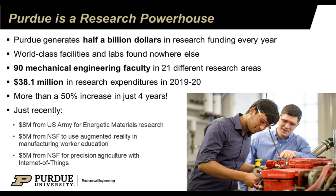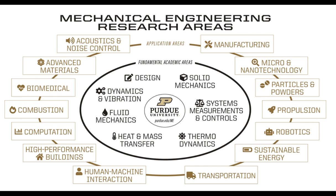Just recently, in August and September, we had great success with three nationally recognized centers coming to Purdue. One is $8 million per year for three years — already funded — so the total dollar amount is $24 million from the U.S. Army for energetic materials research coming to Purdue, 100% of it coming to Purdue. We are also part of two NSF Engineering Research Centers where, in each case, $5 million are coming to Purdue — one in Augmented Reality in Manufacturing Worker Education, and the other in precision agriculture using the internet of things. Both of these NSF centers have a strong footprint in mechanical engineering.